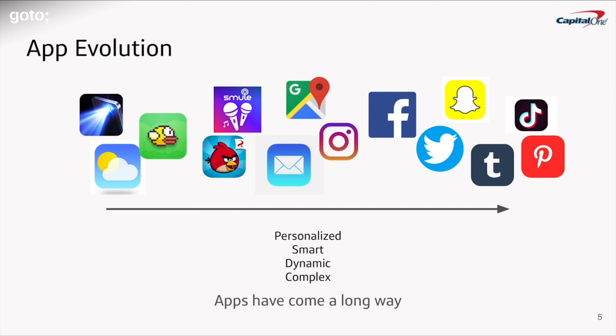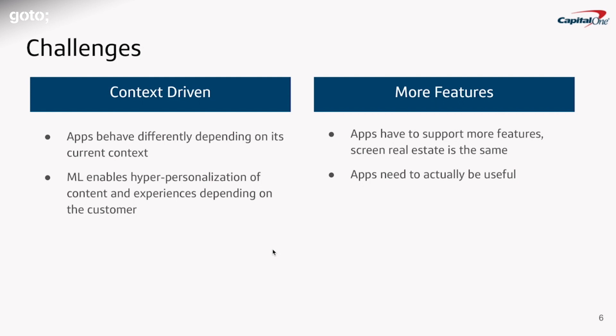The next generation of apps we're going to build are going to be much more dynamic in nature and will continue to capitalize on improvements to provide truly unique customer experiences. So what are some of the challenges with building a modern-day mobile app? Modern apps have become much more context-driven — there can be an incredible amount of content to display to the user depending on the user itself. Moreover, apps these days have to support an ever-growing list of features.